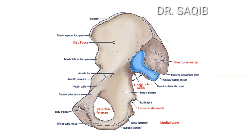The notches are the greater sciatic notch and the lesser sciatic notch. This is the iliac tuberosity, and this is the auricular surface of the ilium for the sacroiliac joint.